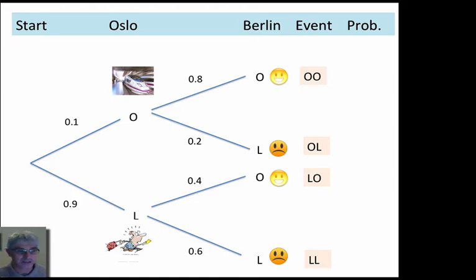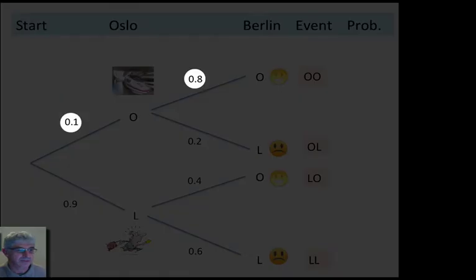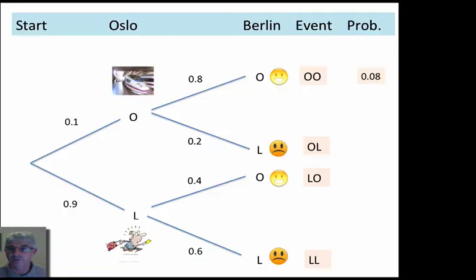So, what are the probabilities? How do we work this out? We can find very easily from our tree diagram the probability of each event and then some combination of events. How do we find the probability of each event? We simply multiply along the branch, along the branches that lead to that event. So, the OO event, the top one there, we multiply the probabilities of those two O branches. 0.1 times 0.8 gives 0.08.